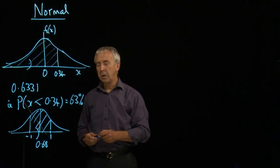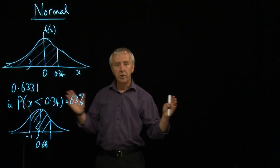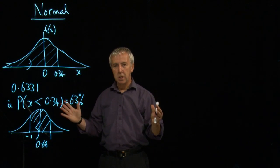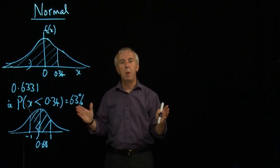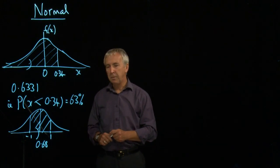So if there's a standard deviation of one, the probability of being within one standard deviation of the mean is 68%. Two-thirds of the population roughly are within one standard deviation of the mean.